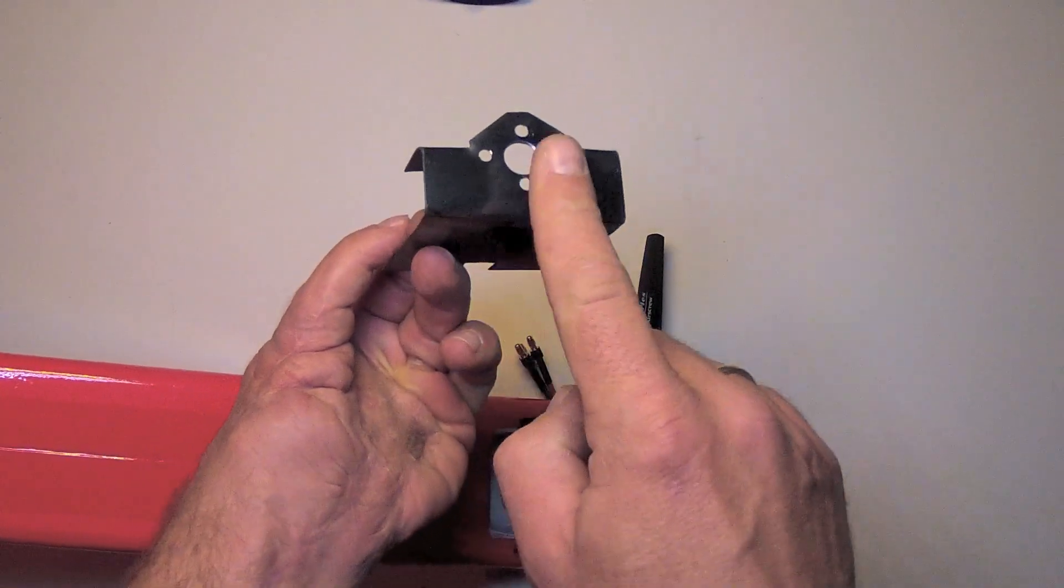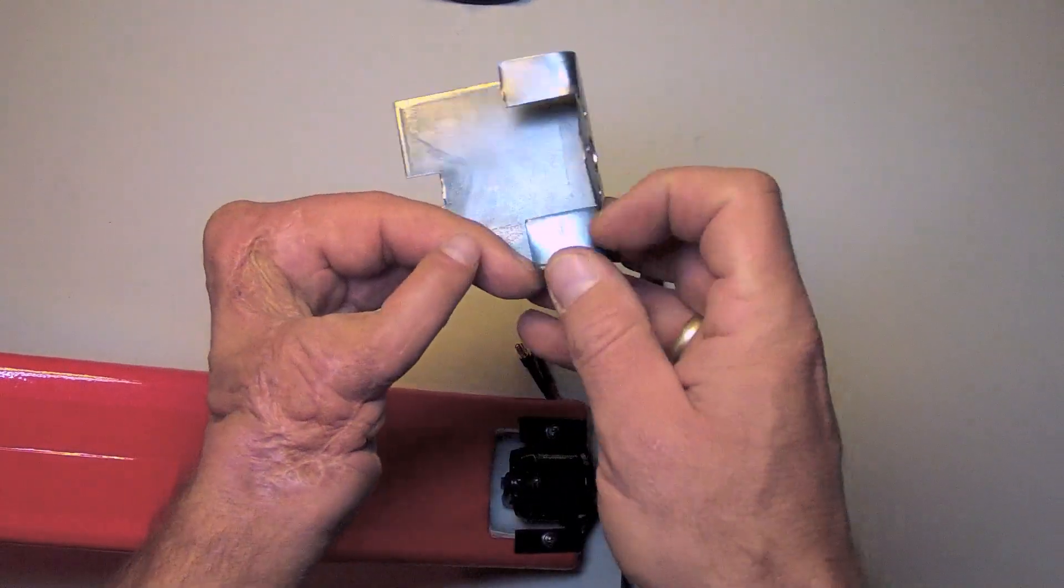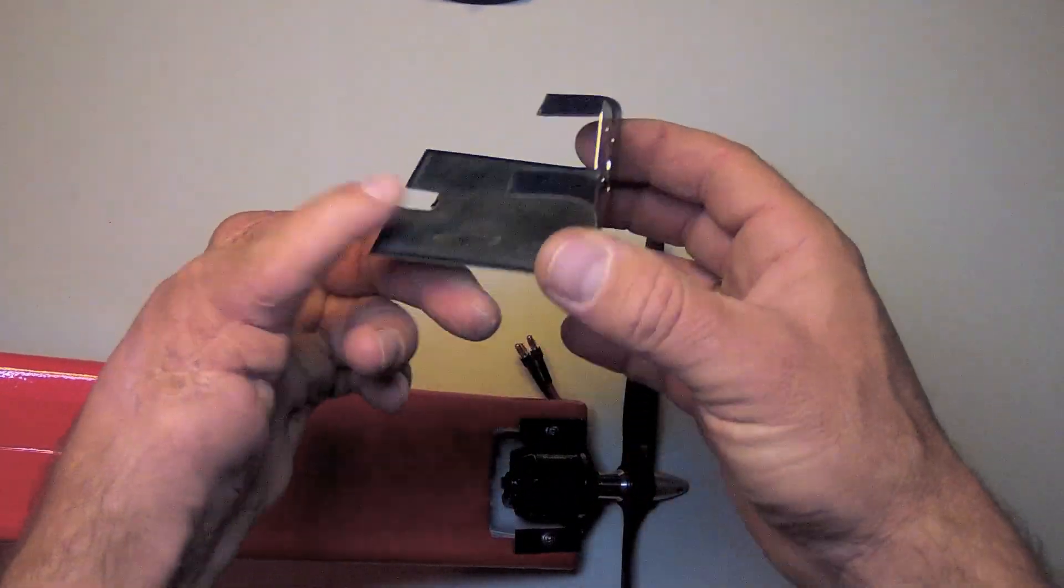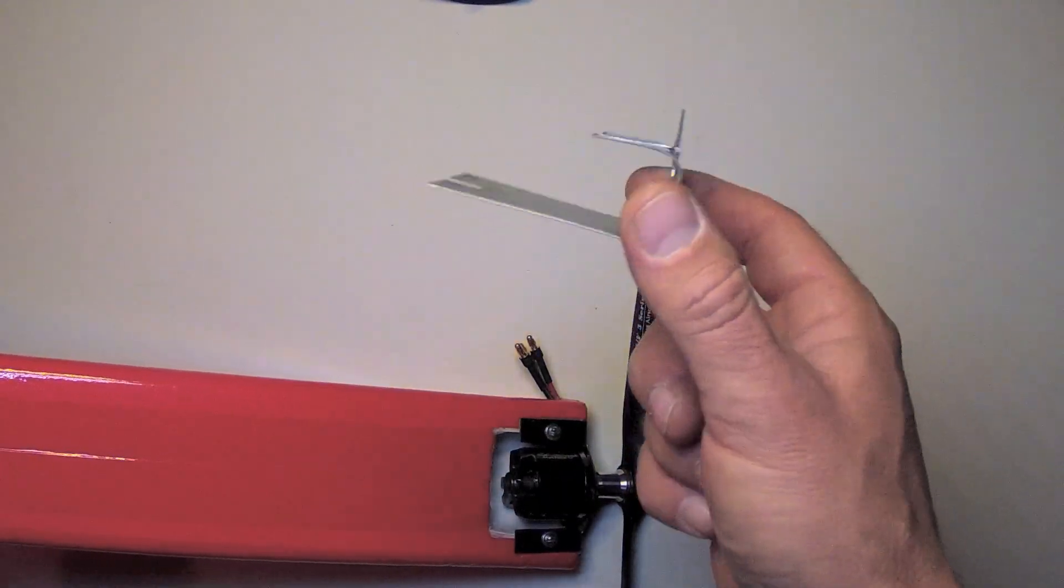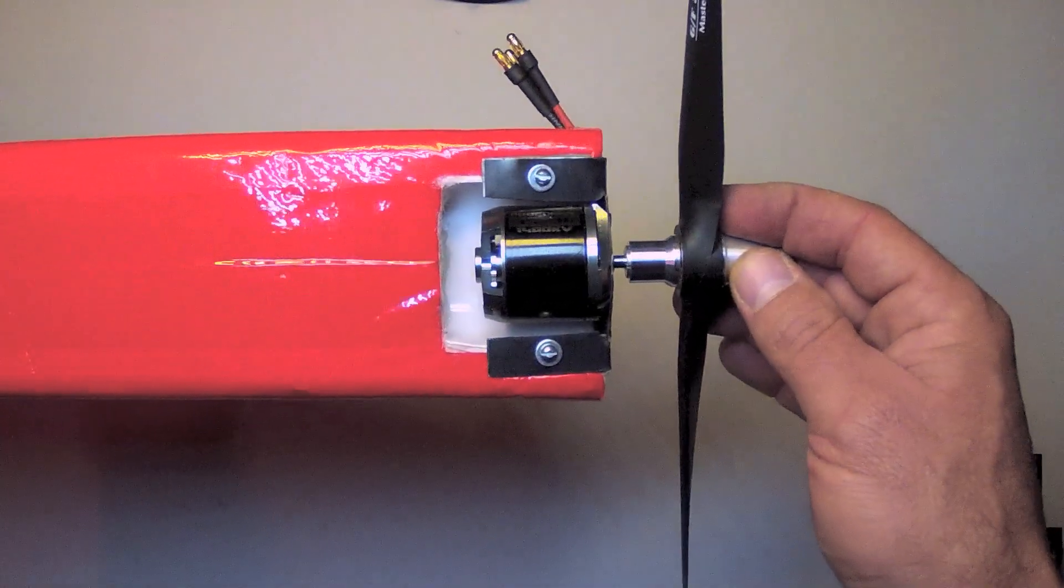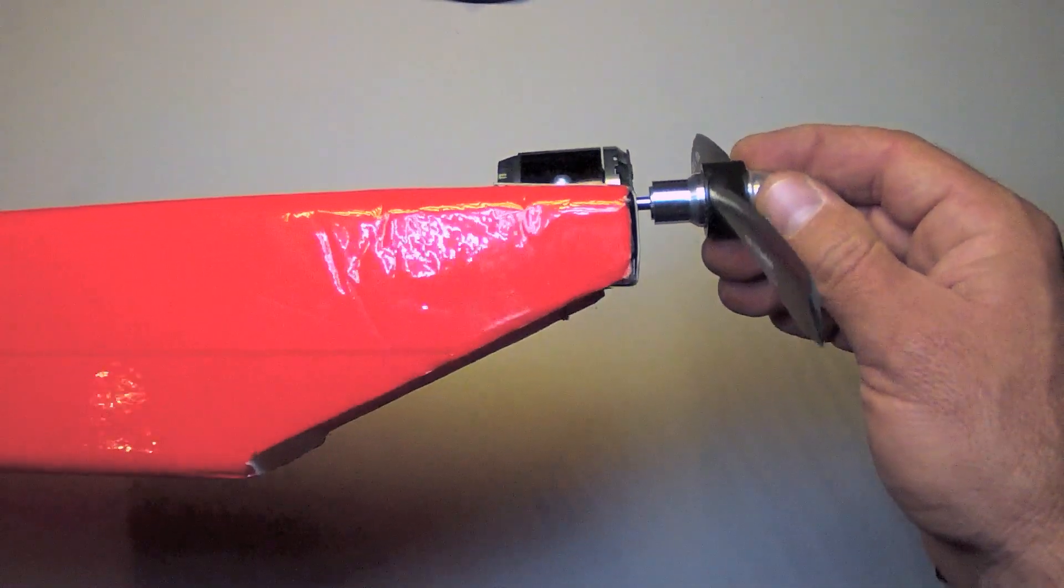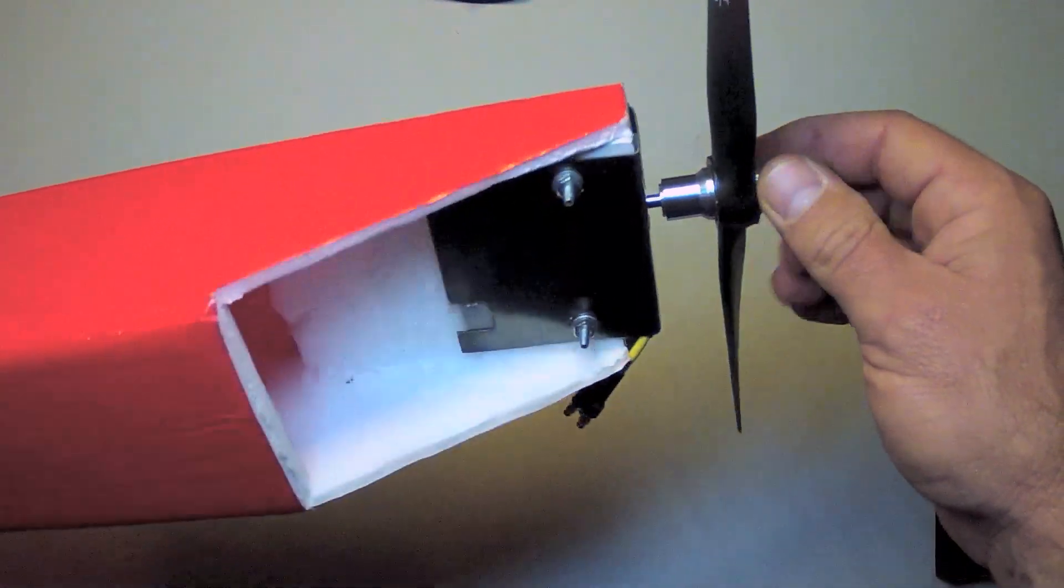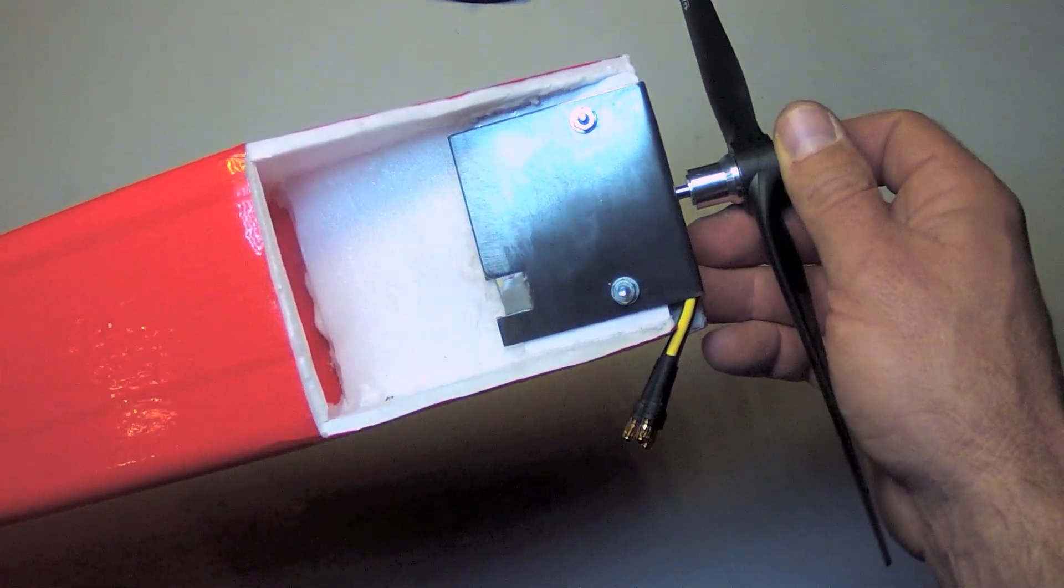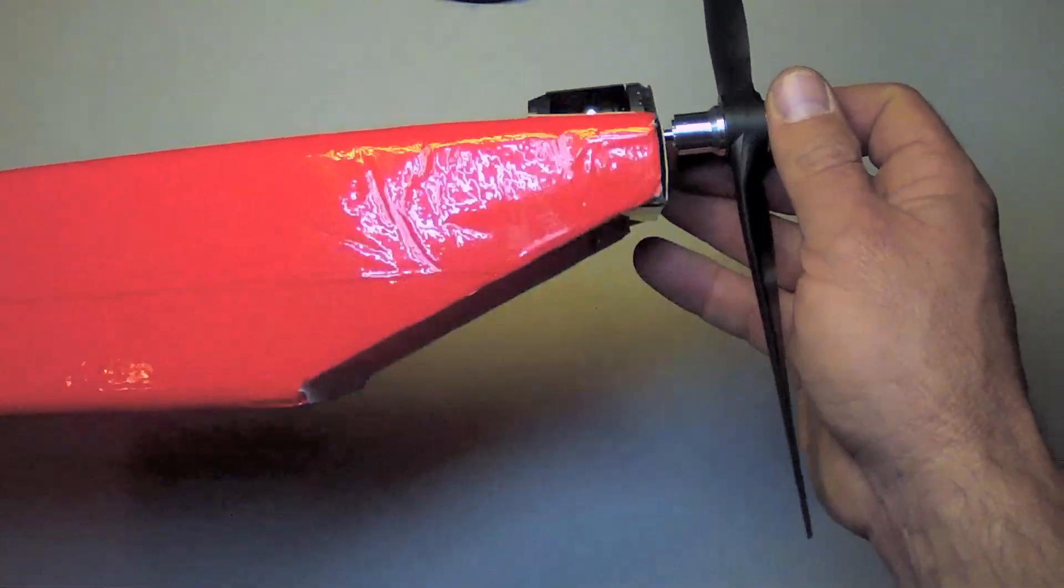Using a variation of that L-shaped motor mount where it L's up and then has additional tongues that protrude forward, you can accomplish a one-piece motor mount with a sandwich effect like this one. Here the motor is partly recessed into the fuselage. Screws have been placed through and through the fuselage.